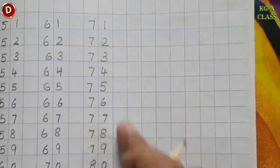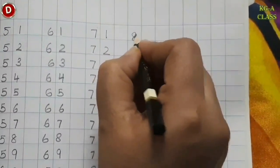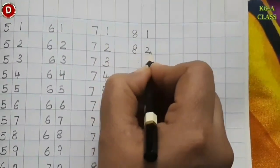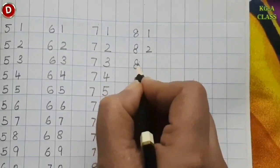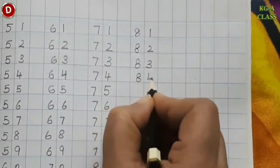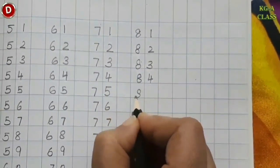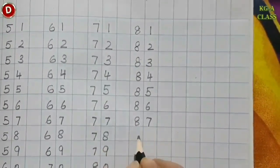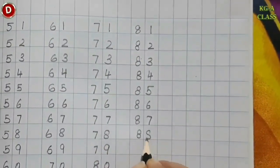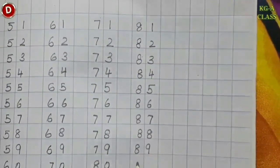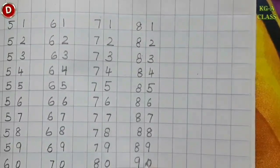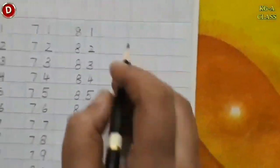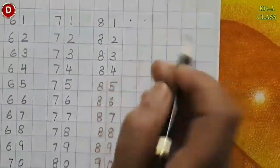Children, after writing 80, leave the next line. Then comes 81, 82, 83, 84, 85, 86, 87, 88, 89 and then comes 90. After writing 90, you have to leave two lines.